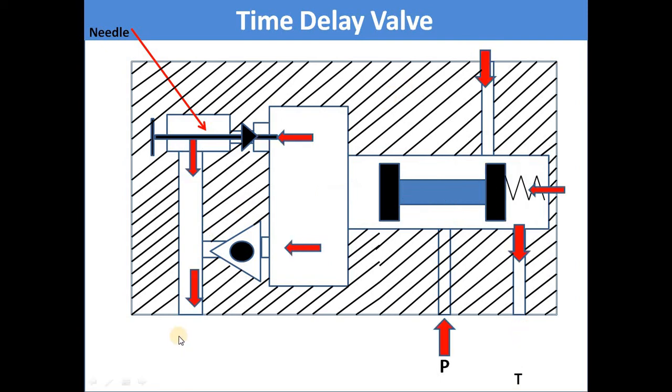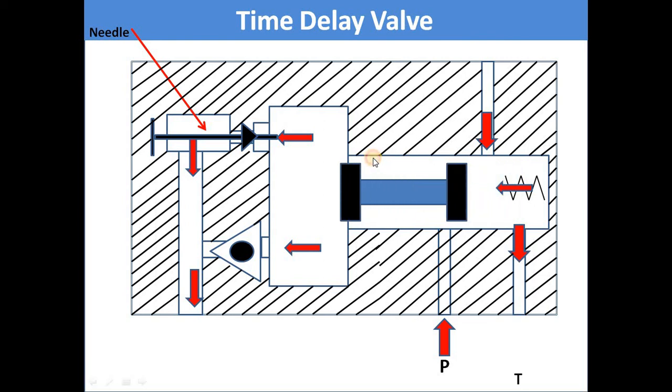Now, the second position. When you cut the supply from the P port, the medium from the actuator comes back. First, the oil from the air reservoir leaks to the tank side. Then the spool shifts to the left side. At this time, the check valve is closed.